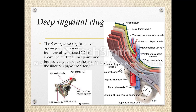The mid-inguinal point is the point midway between the anterior superior iliac spine and the pubic symphysis. The deep inguinal ring is about 1.2 centimeters above the mid-inguinal point. It is also just lateral to the inferior epigastric vessels — the inferior epigastric artery and vein. Key points: it is oval in shape, present in the fascia transversalis, 1.2 cm above the mid-inguinal point, and lateral to the inferior epigastric artery.